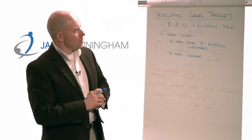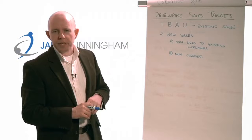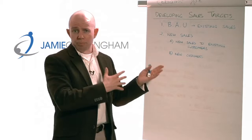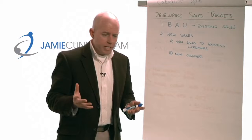The first part is to understand BAU, which stands for Business As Usual. If nothing else changed in your business in the next year — I'm going to use a year as a timeframe for your sales targets — if you do the same things this year as you did last year, what could you possibly expect to happen? That's the first number you need to take a look at.